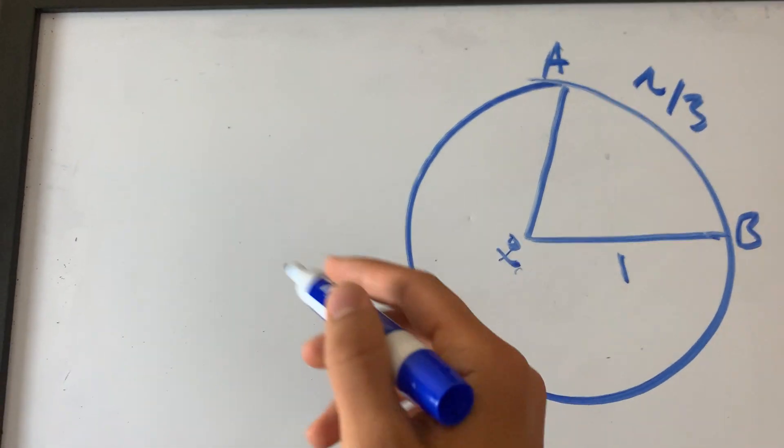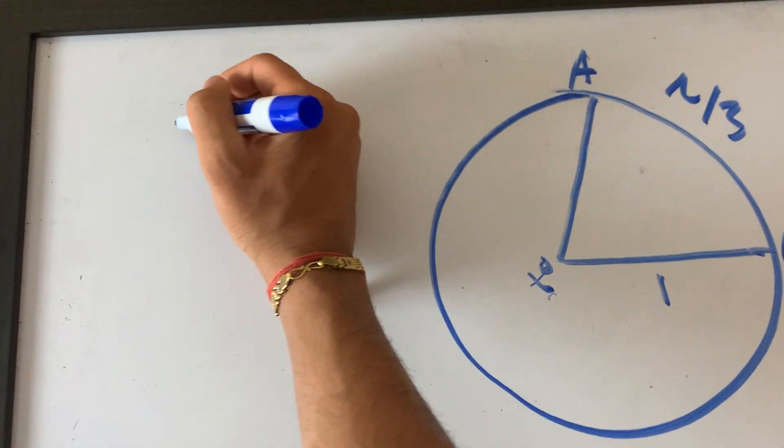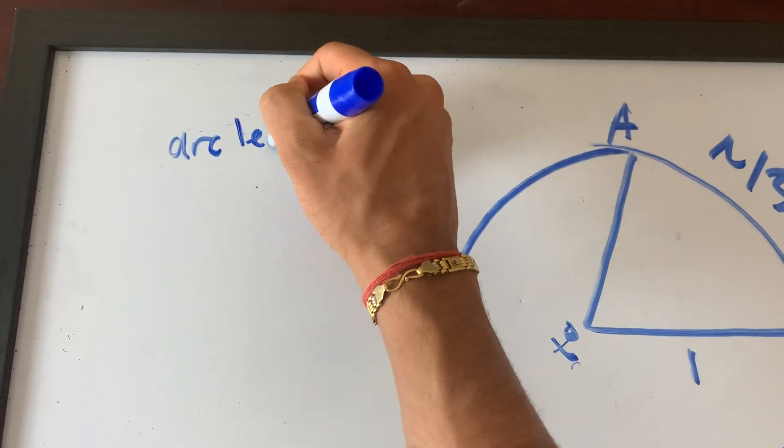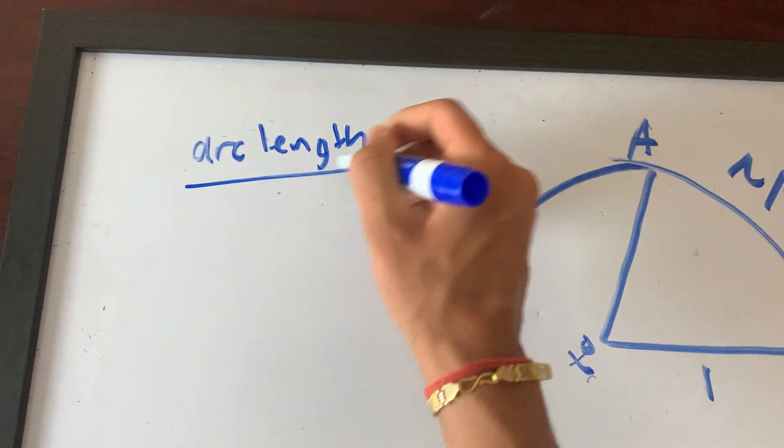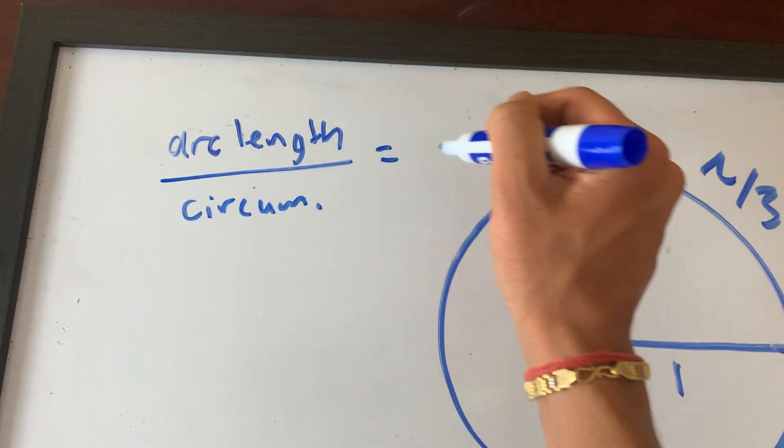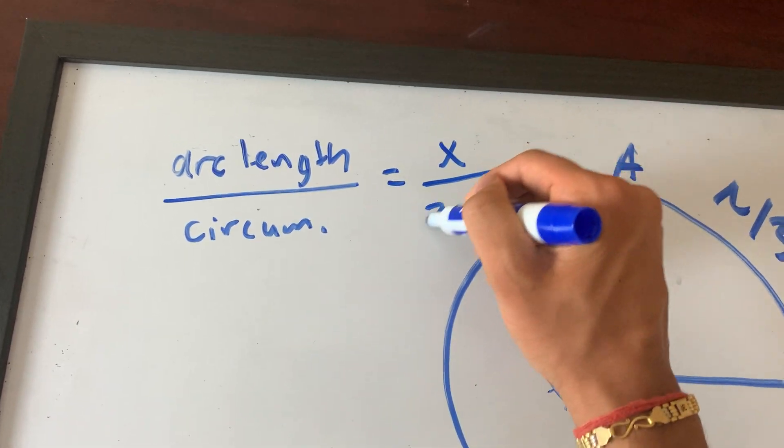So, the formula to remember, guys, you have to remember this by heart, okay? The SAT note sheet does not have this. So if you don't remember this, you're doomed. Arc length over circumference equals x over 360.